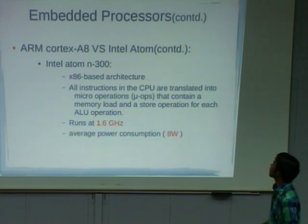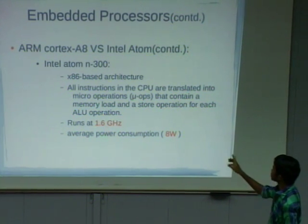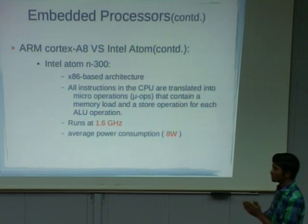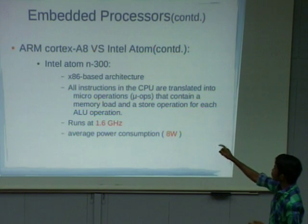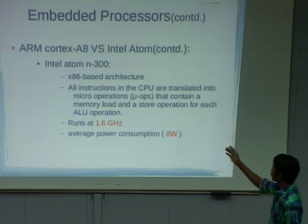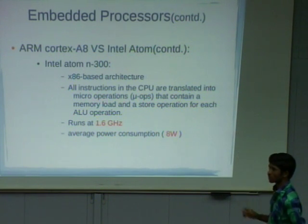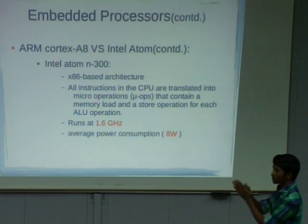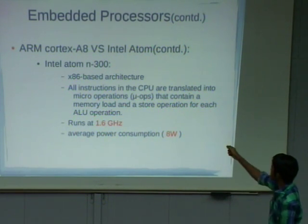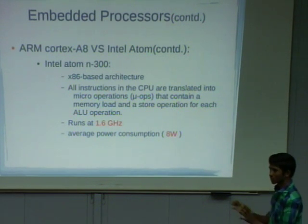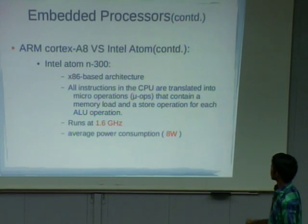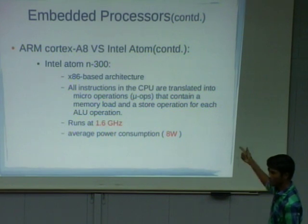Coming to Intel Atom, it uses x86-based architecture. Even though x86 uses register-memory architecture, to support embedded systems they modified this processor to support load-and-store architecture by transforming original operations into micro-operations. The frequency operates in the gigahertz range. Now see the power consumption rate — it takes 8 watts per second. Compared to the Cortex-A8, Intel Atom consumes a lot of power. This is the main drawback.